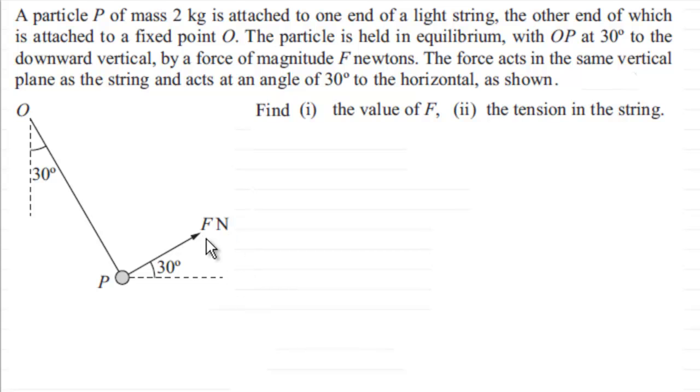What we've got to do is find the value of F and the tension in the string. The first thing I want to do is mark on some forces. We've already got the force F Newtons holding the particle, so I'm going to override that in red because I'm putting forces in red. We've also got the weight of the particle - it's got a mass of two kilograms, so its weight is mg acting downwards, which is 2g Newtons.